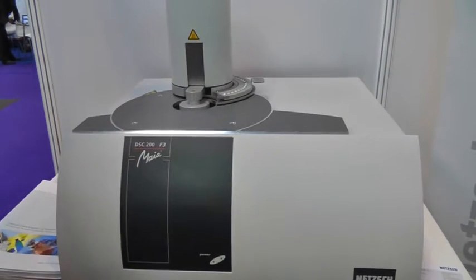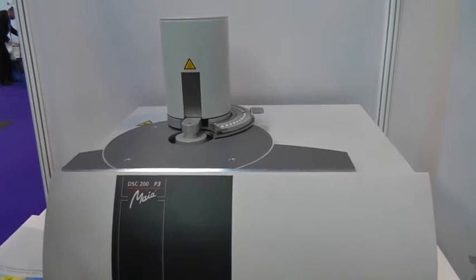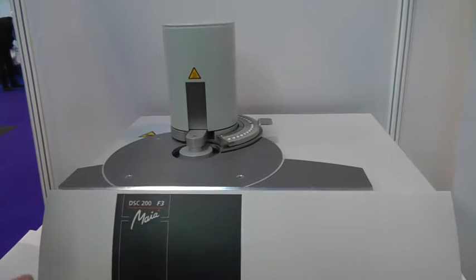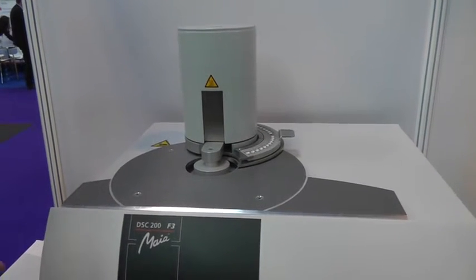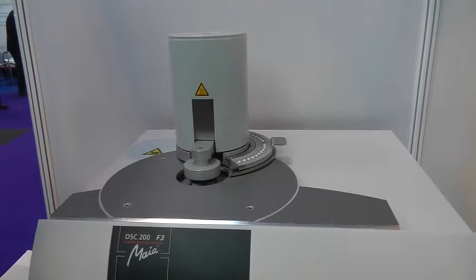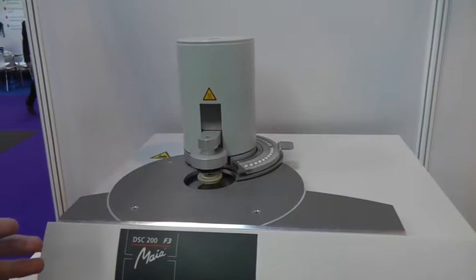This particular unit that we're looking at is called a differential scanning calorimeter system which basically measures energy changes of materials as a function of temperature - exothermic or endothermic reactions.